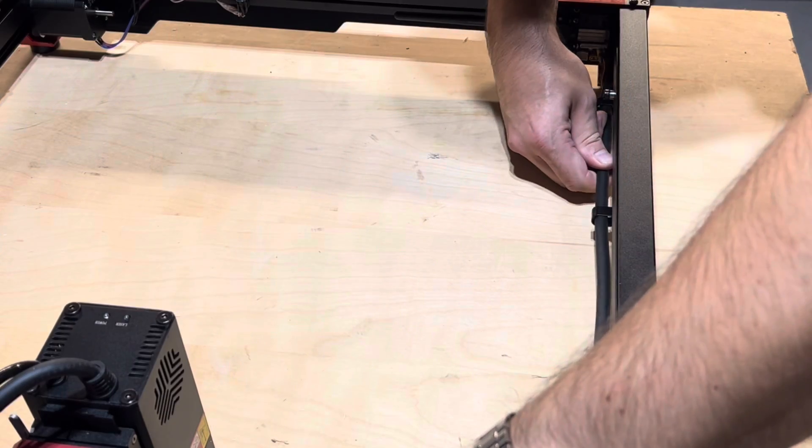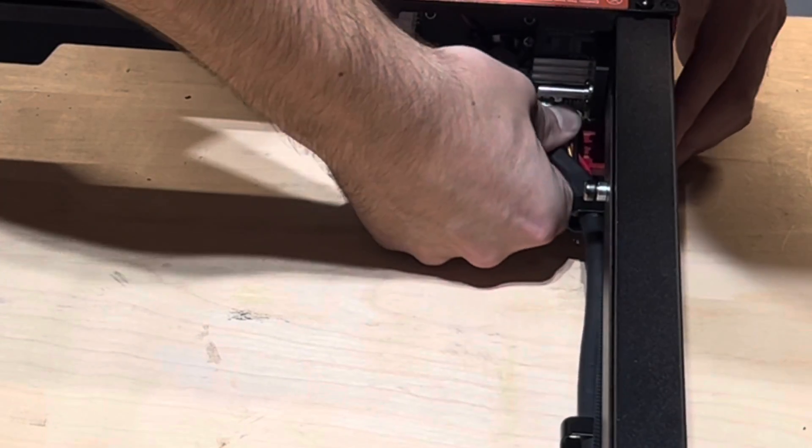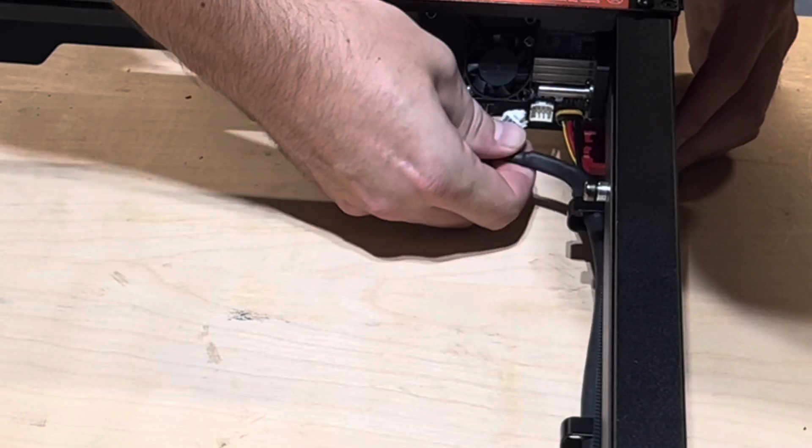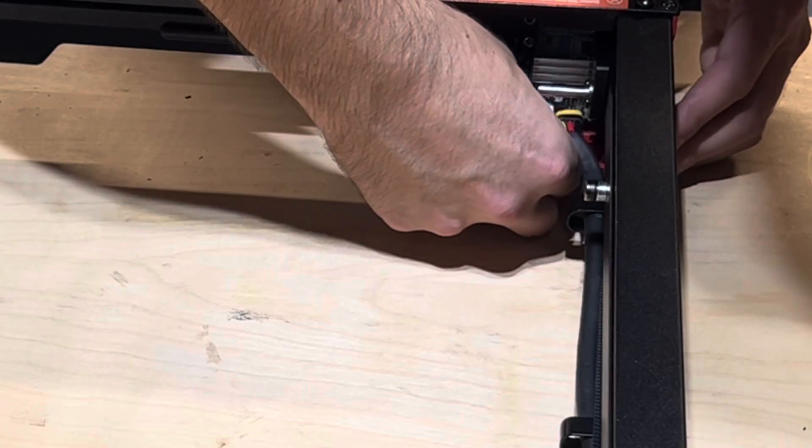Step six is connecting the cable to the main board. Insert the cables into the ports of the main board. They are color coded so it's easy to match up.